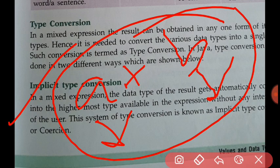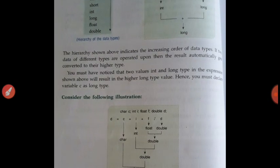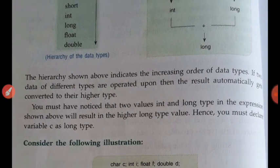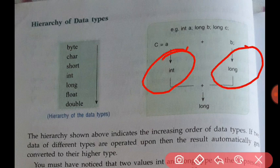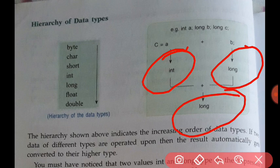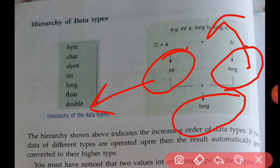In explicit type conversion, you can see this hierarchy: int, then long. The higher-most data type in terms of size — int is four bytes and long is eight bytes — so the result will be converted to long. This is the hierarchy in terms of size.